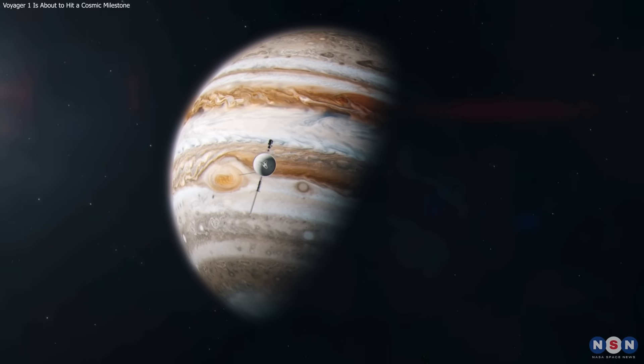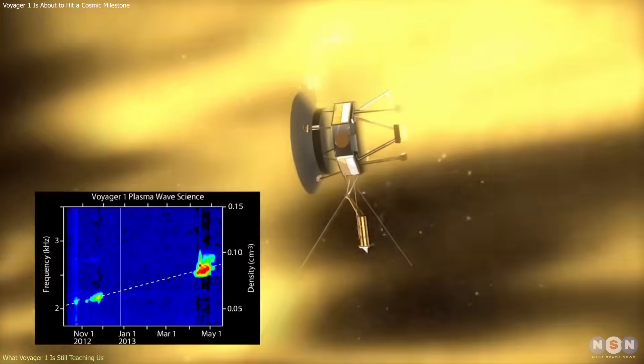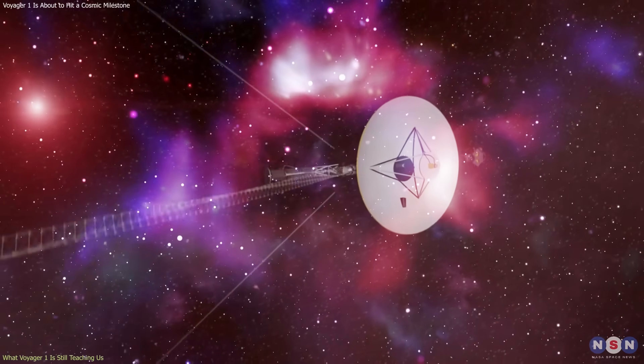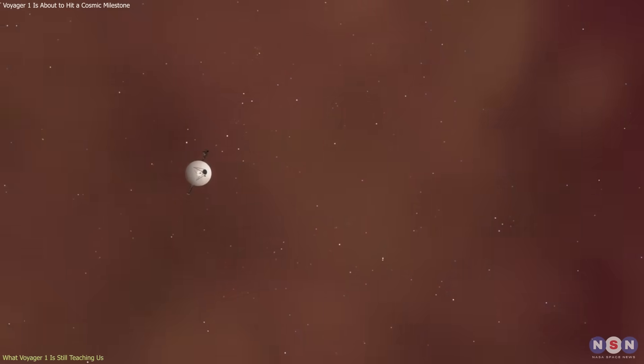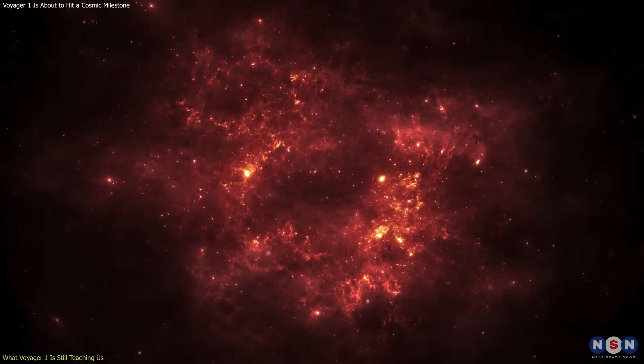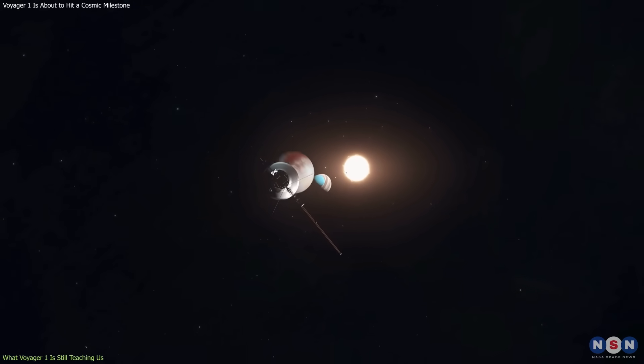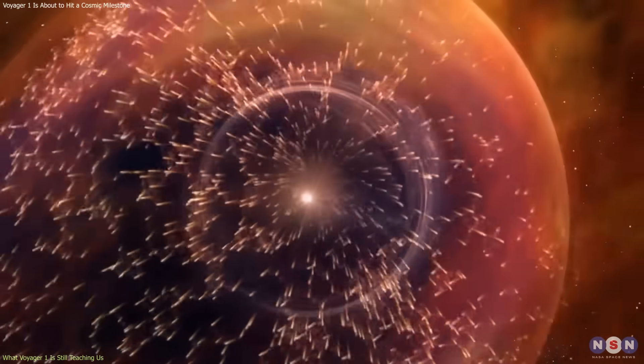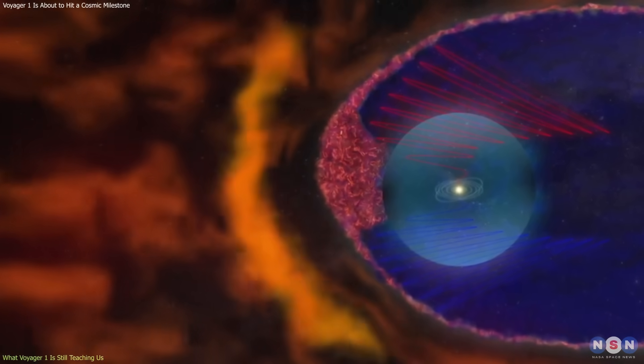Although far from any planet, Voyager 1 remains scientifically productive. Its instruments continued to record the density, temperature, and magnetic structure of the interstellar plasma surrounding it. When it first entered interstellar space, scientists expected a calm, uniform environment. Instead, Voyager detected a surprisingly dynamic region where solar storms and magnetic fluctuations still exert influence billions of miles from the sun. This discovery reshaped our understanding of how the heliosphere interacts with the broader galaxy.